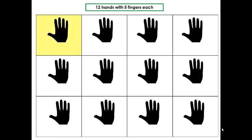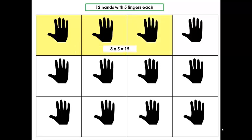One hand has five fingers, so we can say 1 times 5 equals 5. Two hands times 5 fingers will give us 10 fingers. Three hands times five fingers will give us 15 fingers. Four times five fingers will give us 20 fingers.